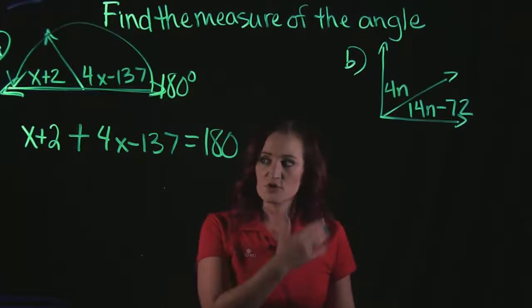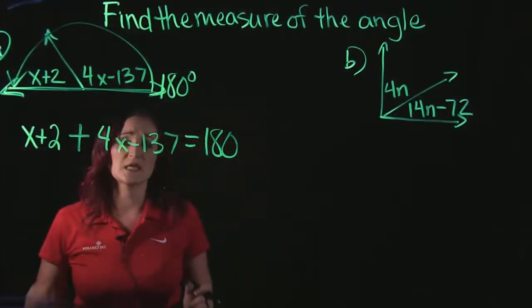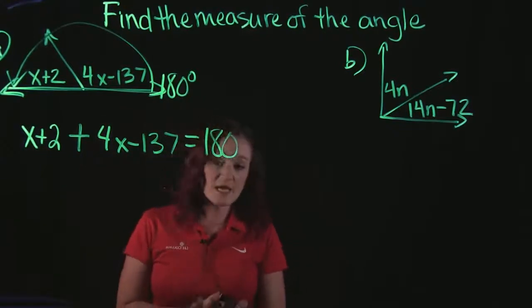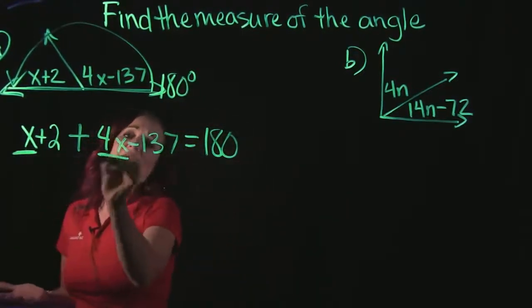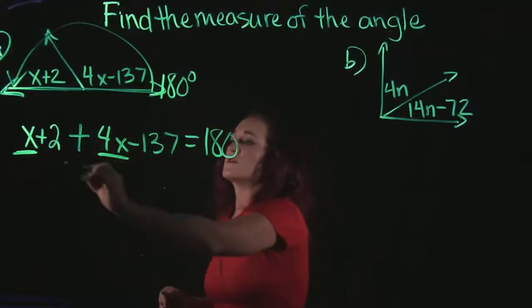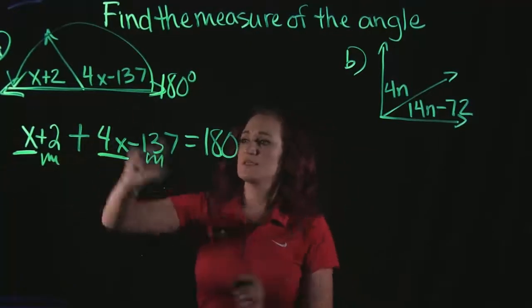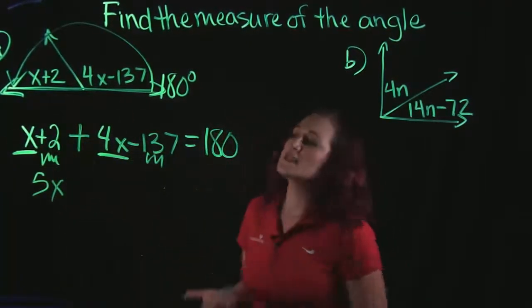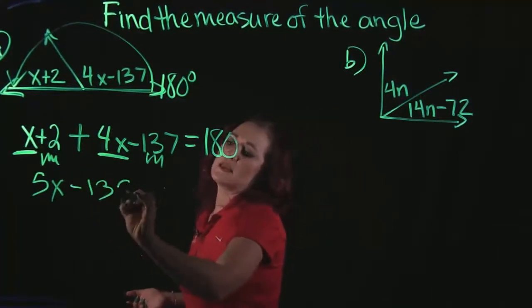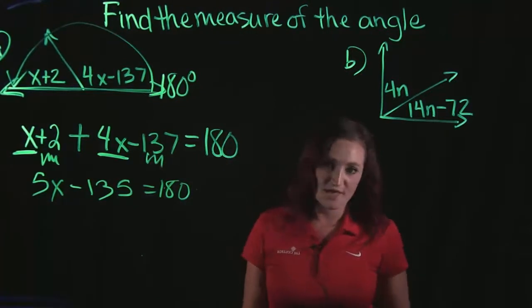After this it's a matter of using your solving equation skills. So if I'm taking a look at this equation here, the first thing that we would start with is combining like terms. So I would combine the x and the 4x together, and I would also combine my numbers together. x plus 4x gives me 5x. And 2 minus 137 gives me minus 135. And that all equals 180 degrees.